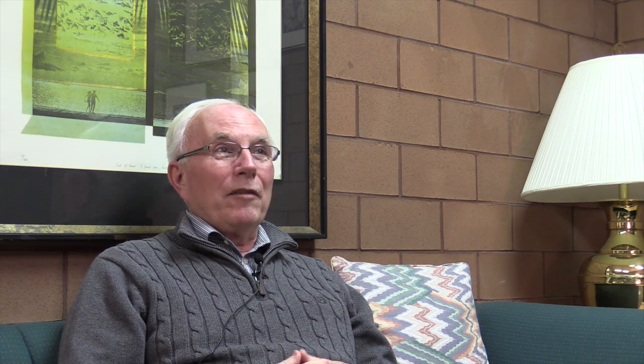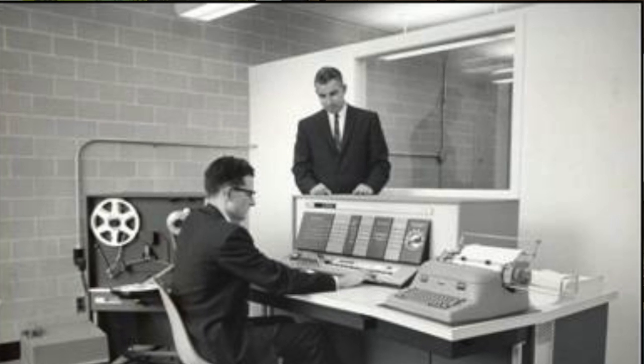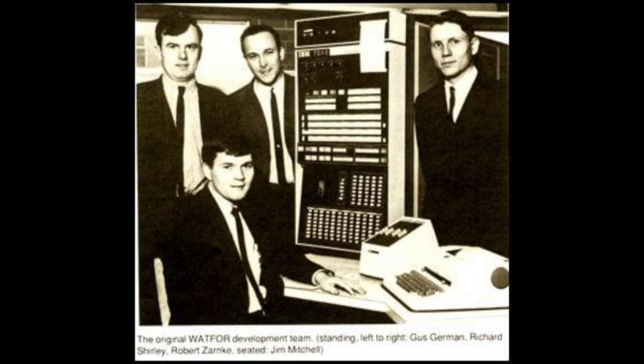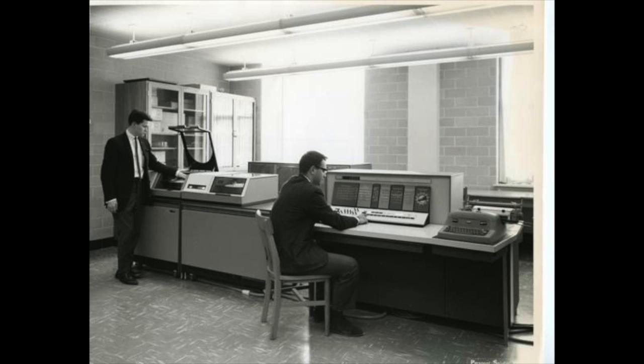That would be about 1964 or '65. In the summer of '65, Wes Graham proposed to four of these students — Jim Mitchell, Gus German, Richard Shirley, and Bob Zarnke — that they might be hired to write a compiler that would improve on the FORTRAN compiler, which wasn't very effective. Over the course of one summer, four undergraduate students wrote a new compiler called the WATFOR compiler.